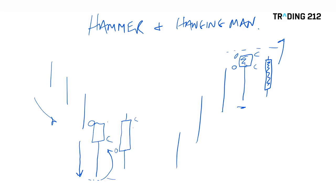I'm not as big a fan of the Hanging Man as I am of the Hammer pattern. The Hammer makes more sense from a psychological point of view — the market has pushed lower, but during the course of the day sentiment turns around and buyers come back in. It's not as strong an argument with the Hanging Man, but they are two patterns that are always covered together, which is why we're doing it this way. So that's the theory — let's take a look at some real-world examples.